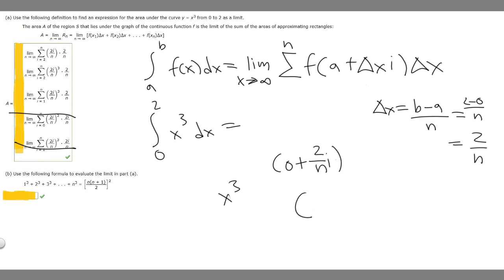So whatever we plug into the x values of our function is going to be 2 over n times i, or just 2i over n. And so basically we're going to take this and plug it into the x value of our function. So our function is y equals x cubed. So it's going to become y equals, we plug this in, so 2i over n cubed.